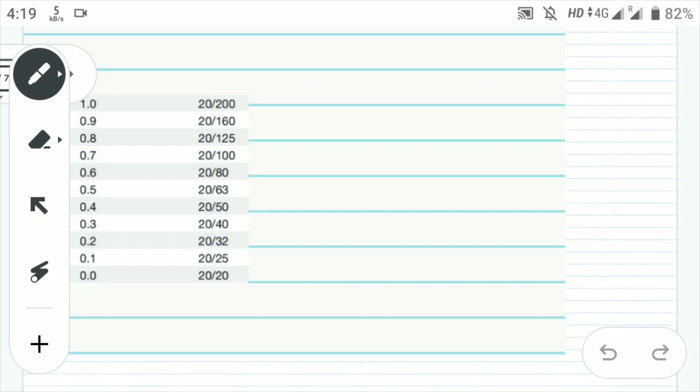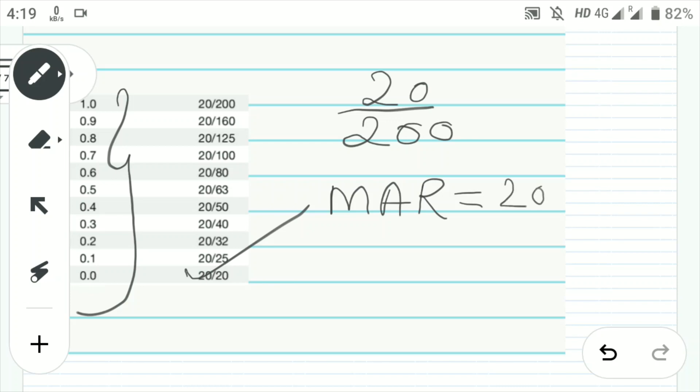So now you can see here that two values are given. The values on this side are given in Snellens and the values on this side are given in logmar. So let's take the example 20 by 200. First we have to calculate the minimum angle resolution. So minimum angle resolution will be 200 by 20, that is equal to 10. Now we have to take log of 10. So you already know log base 10 of 10, this will be equal to 1. So we get the correct answer.